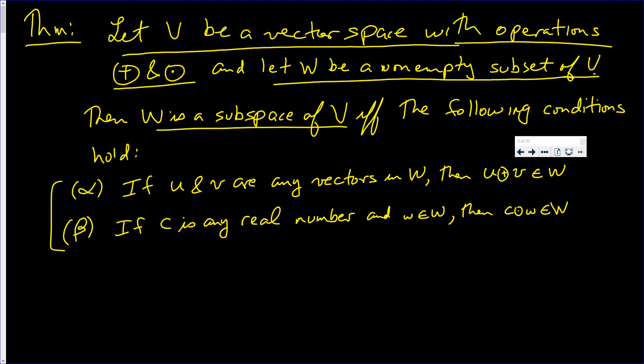Namely: if U and V are any vectors in W, then U plus V is in W; and if C is any real number and little w is in the set W, then C⊙w is in W. We need to prove that these two conditions are enough to satisfy the definition of a vector space, because for W to be a subspace of V it must be a vector space on its own. Once you have those two conditions, W is called a subspace.